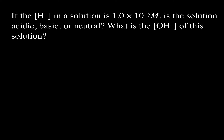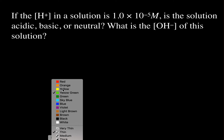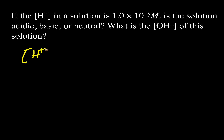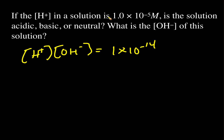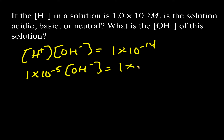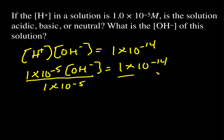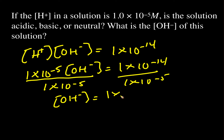Here's an example. If the H⁺ in a solution is 1×10⁻⁵, is the solution acidic, basic, or neutral, and what is the OH⁻ concentration? I would calculate OH⁻ first using: [H⁺] × [OH⁻] = 1×10⁻¹⁴. With H⁺ = 1×10⁻⁵, we divide both sides by 1×10⁻⁵, and OH⁻ equals 1×10⁻⁹ molar.